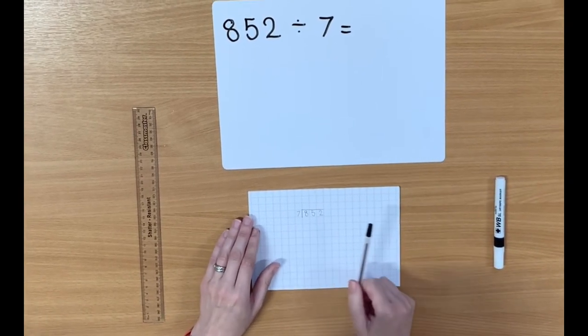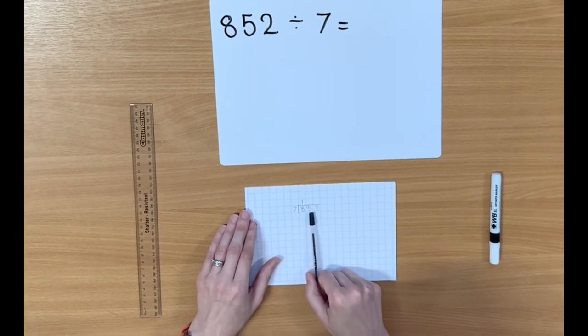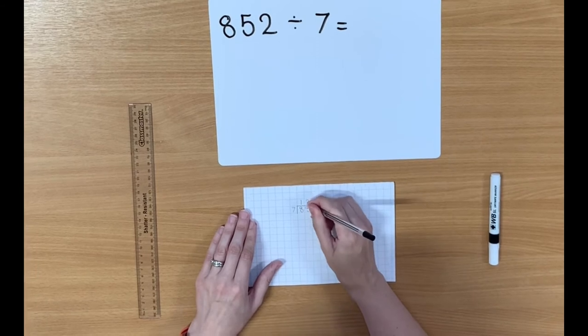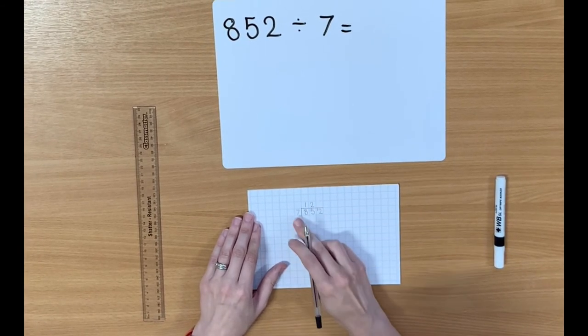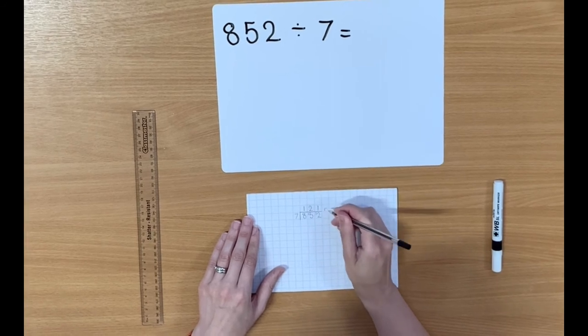Now, how many 7s are there in 8? Well, there's one 7 in 8, remainder 1. How many 7s go into 15? There are two 7s in 15, remainder 1. How many 7s are there in 12? There is 1, remainder 5.